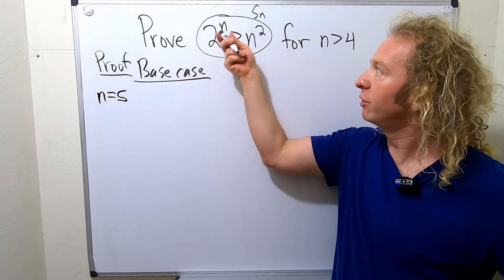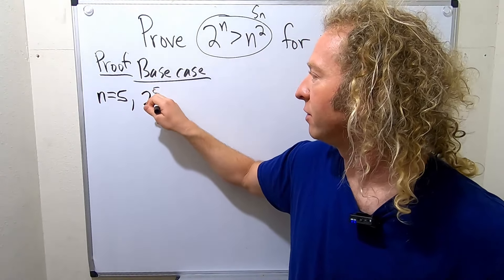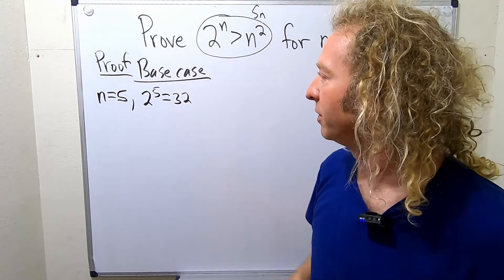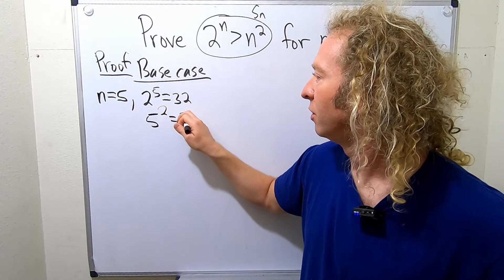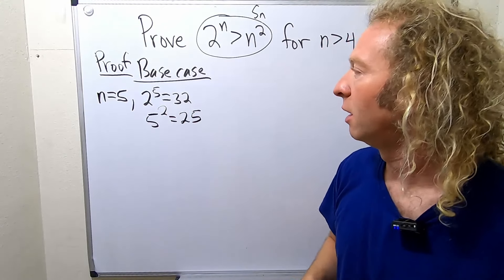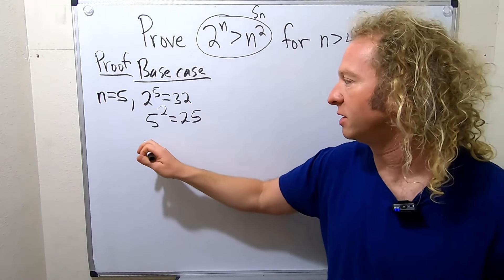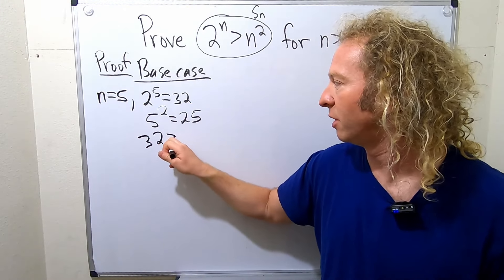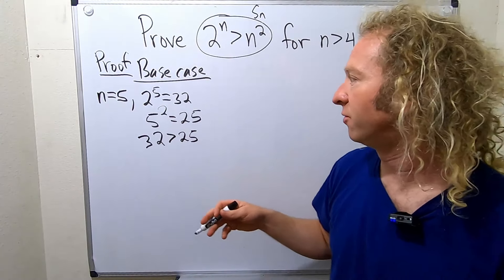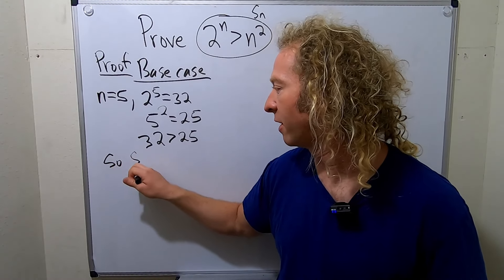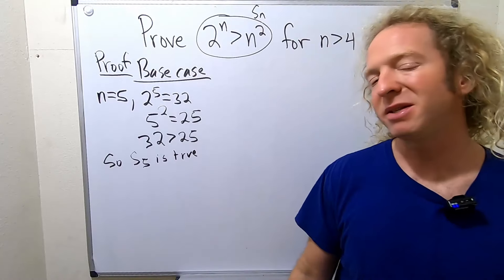When n equals 5, we have 2 to the 5, which is 32. And n squared is 5 squared, which is 25. 32 is bigger than 25 — so the statement is true when n equals 5. S sub 5 is true. Base case proven — the base case is pretty easy.